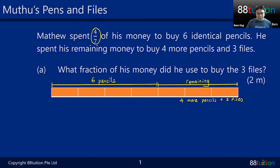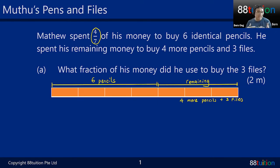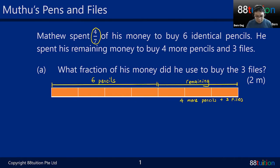The question asks: what fraction of his money did he use to buy the three files? As you can see, there are pencils and there are files. What is the ratio — the number of pencils to files? Because you're given a fraction, you might start to panic. Let's take a look at the part with the most clues.